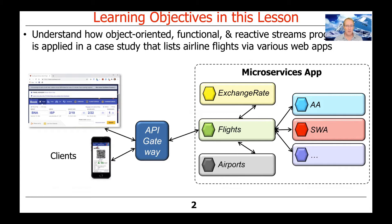We're going to talk about object-oriented programming in the context of this case study. We're going to talk about functional programming — hopefully you're familiar with that from other courses in this program. And then the real main focus is to cover something called Reactive Streams, which is a newer, cooler paradigm that builds upon and extends object-oriented and functional programming in very interesting ways.